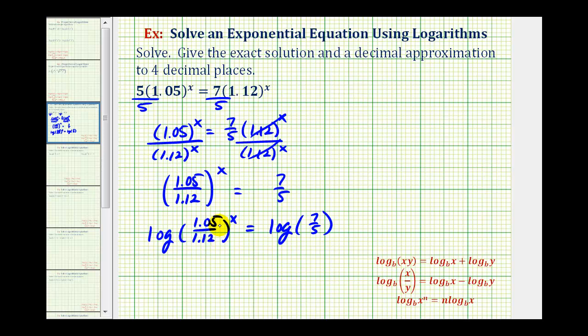Now the main reason we wanted to do this, because now we can apply the power property of logarithms, or this property here, so we can take this exponent and move it to the front, so that we have x times log of this fraction equals log seven-fifths.